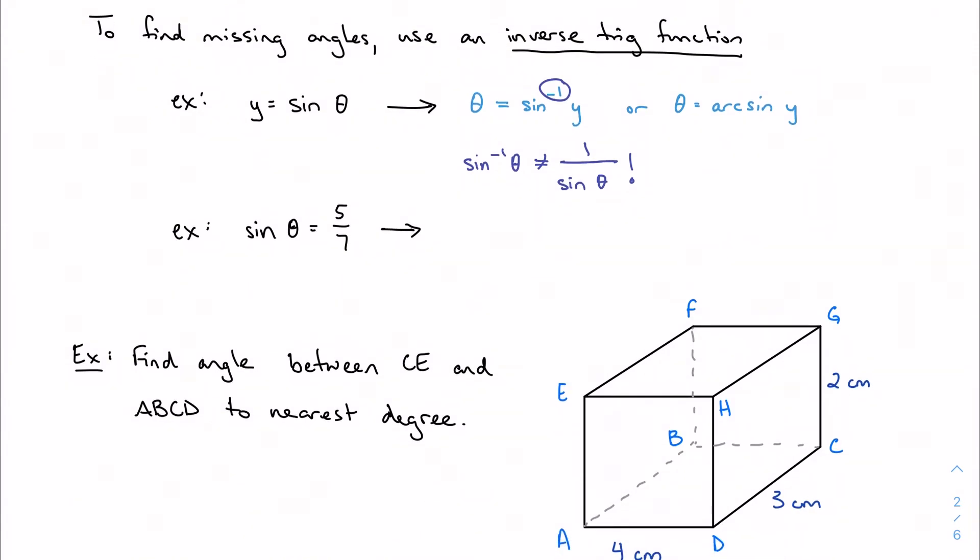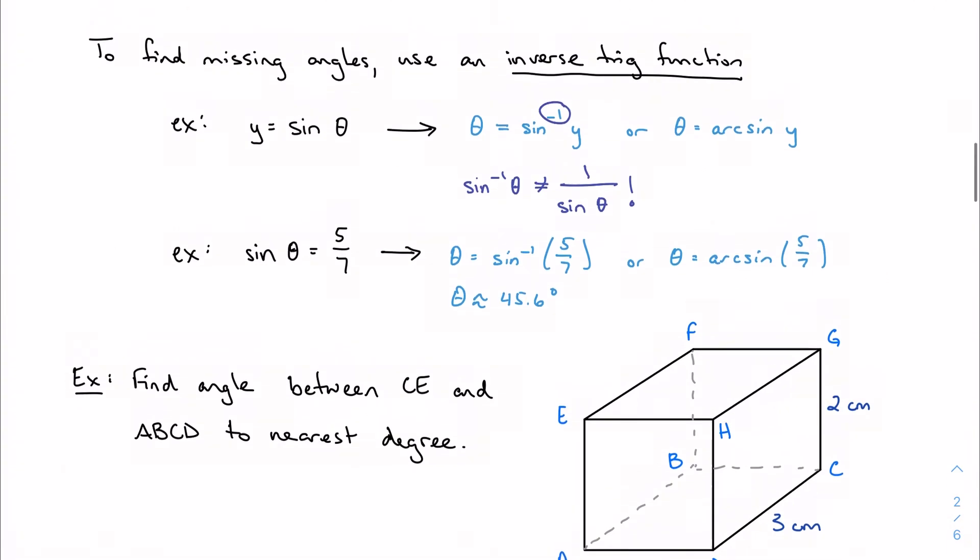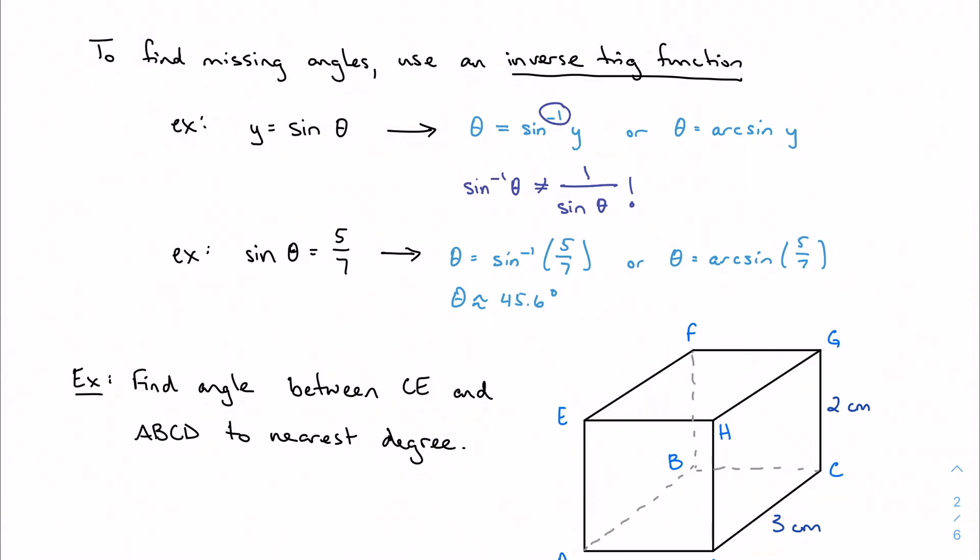So for example, if I want to find the angle that produces five-sevenths, I can write this as theta equals either sine inverse of five-sevenths, or you might see the notation arc sine of five-sevenths. And regardless, it'll give you, if you put this in your calculator, which at this point you kind of have to, approximately an angle of 45.6 degrees. So sine, the ratio of the sides of the opposite and hypotenuse sides of the right triangle, knowing that I have an angle of 45.6 degrees somewhere in there, is approximately five-sevenths. So this allows me to find the angle, and this is going to be more important later when we get into some equation solving with trigonometric functions.